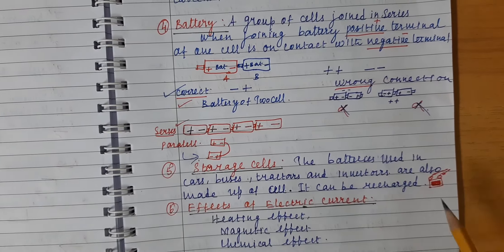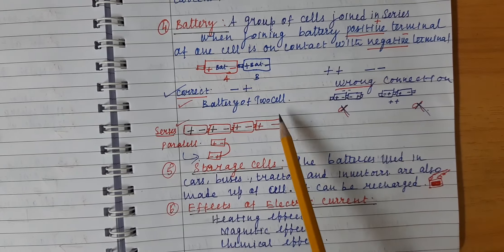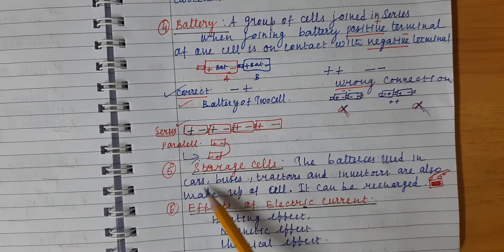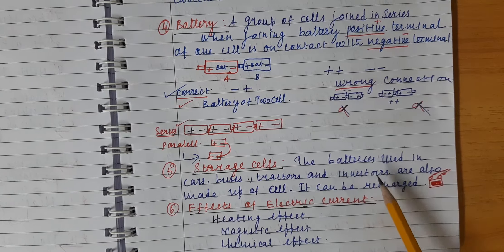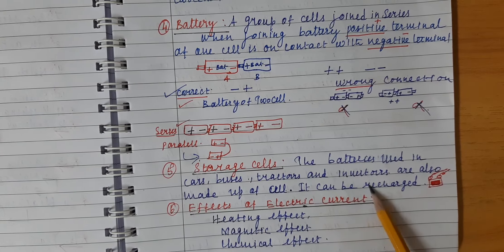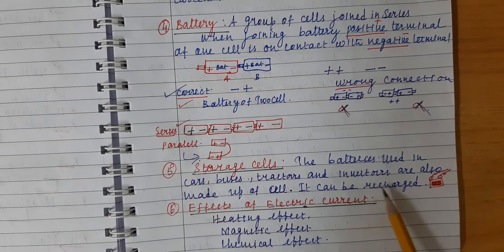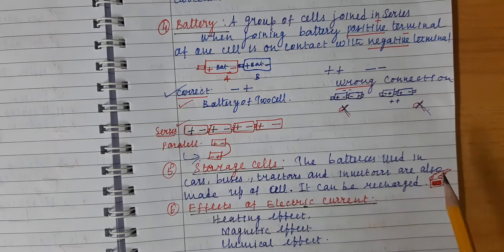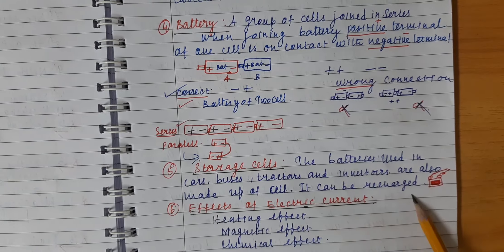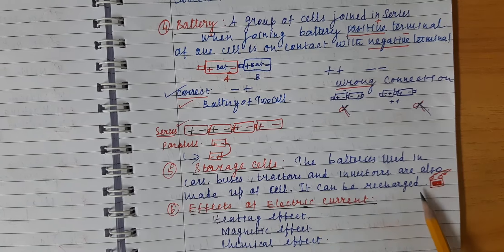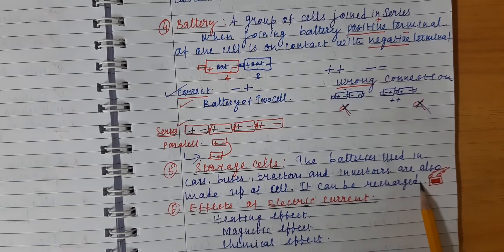The next term is storage cells. Storage cells are used in automobiles — cars, buses, tractors, and inverters. Storage cells can be recharged. The acid inside can be refilled and the storage cell recharged. The batteries used in cars, buses, tractors, and inverters are made up of cells and, using the principle of electrochemistry, they can be recharged again.